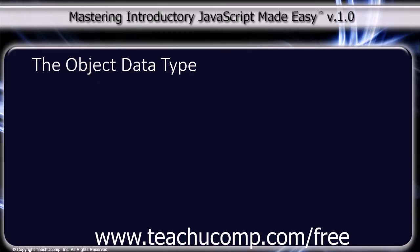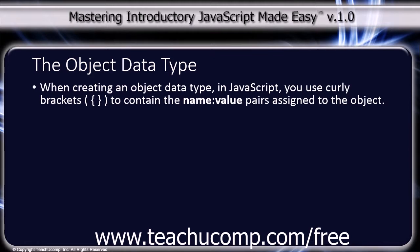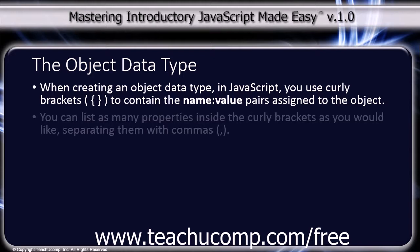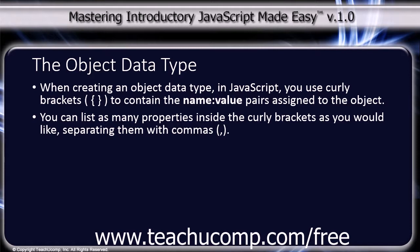In JavaScript, an object is delineated by curly brackets. Inside the curly brackets are the object's properties, and they are defined in name-value pairs with the name and value separated by a colon. You can list as many properties inside the curly brackets as you would like, separating each with commas. Your declaration can also span multiple lines, and any extra spaces or line breaks are ignored.